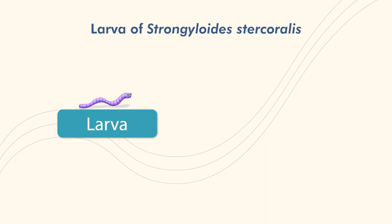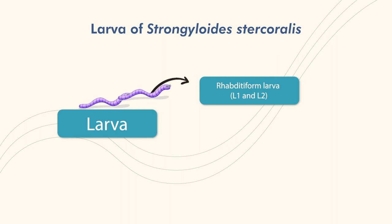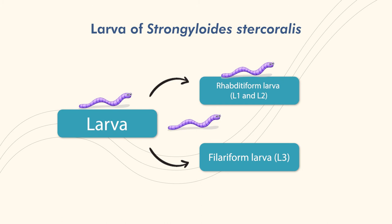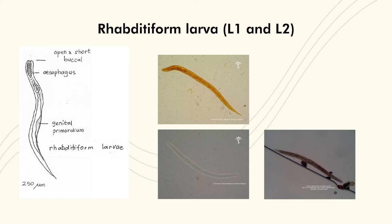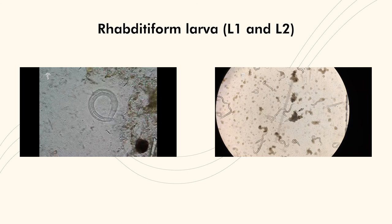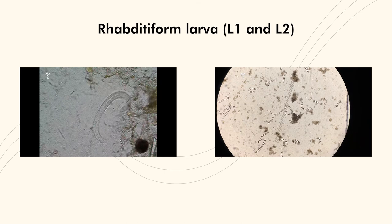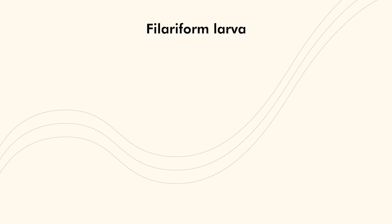As soon as the eggs are laid, the rhabditiform larvae start hatching and bore their way to the lumen of the intestine, from where they are excreted out with the feces. The larvae of Strongyloides stercoralis are of two types: rhabditiform larvae (L1 and L2), and filariform larvae (L3). The rhabditiform larvae are the first stage larvae which immediately hatch out in the mucosa of the small intestine, actively motile, measuring 200 to 300 µm in length and 15 to 16 µm in breadth.